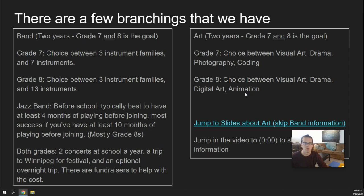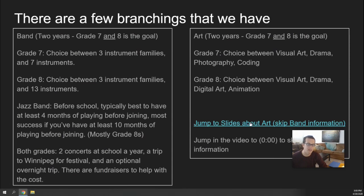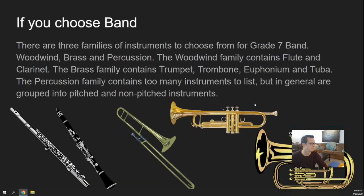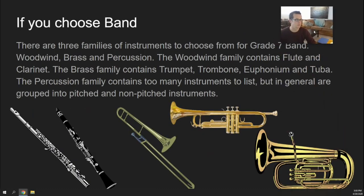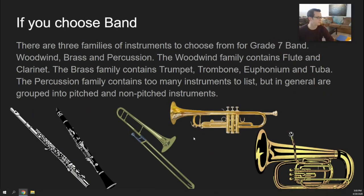My hope is that all of you will come along with me as I take you through the rest of these forms. But if you already know that you want to take art, you might want to skip to those slides. This timestamp here will tell you where to skip to in this video for me talking about the arts. So, choosing band — there are three instrument families: brass, woodwind, and percussion.